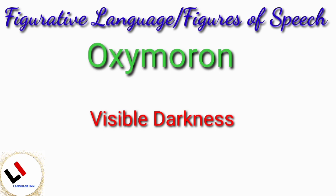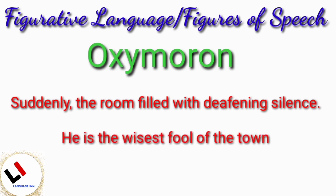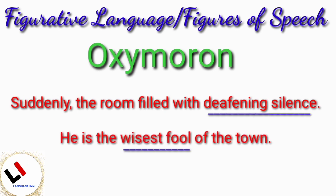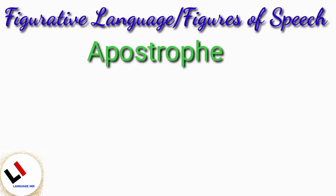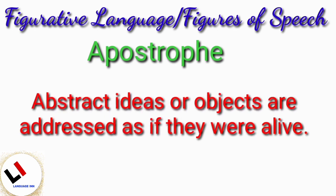Oxymoron. Oxymoron is a figure of speech when two words in a phrase contradict each other. 'Visible darkness' is an example of oxymoron. In a sentence: suddenly the room filled with deafening silence; he is the wisest fool of the town.